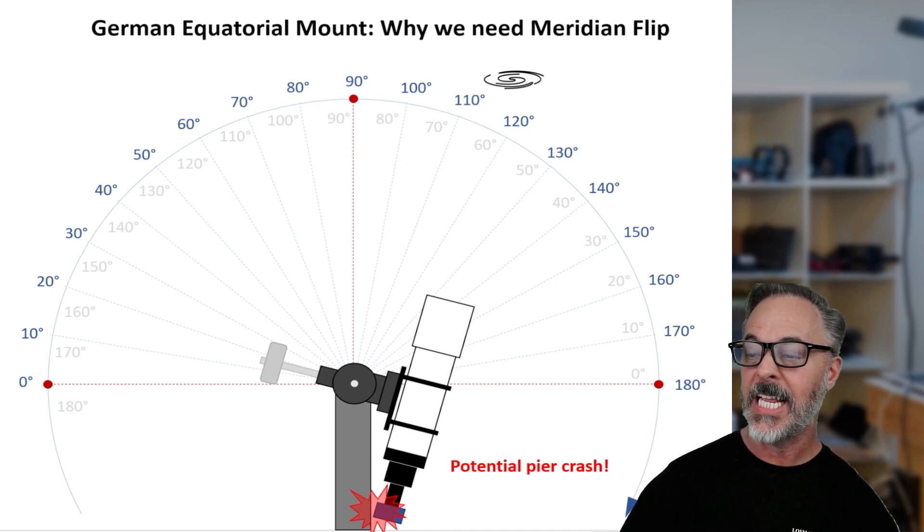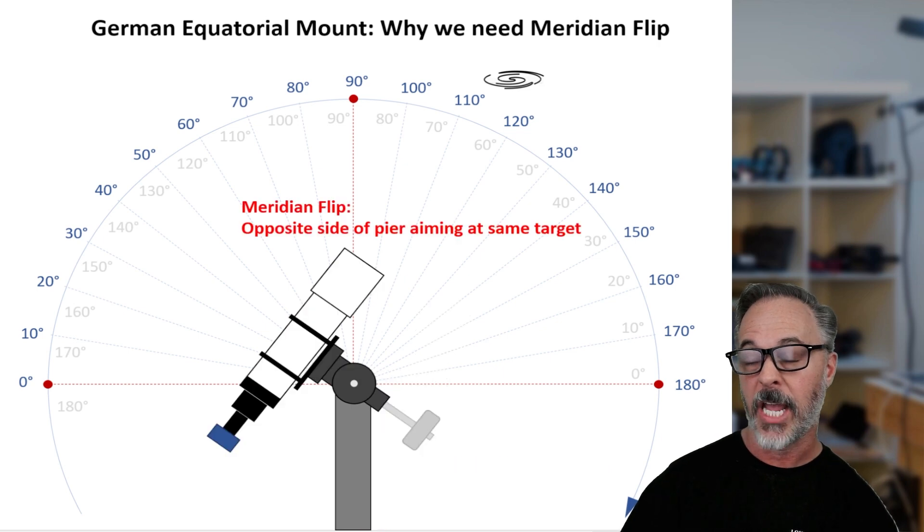So what we need the telescope to do is to flip around, still aiming at the same target and acquire that same target and continue imaging into the Western sky. And that's what's known as a meridian flip.